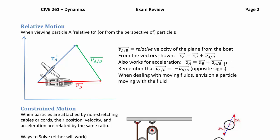The exact same equation form applies for acceleration — no extra terms needed. However, keep in mind that if either of the particles is moving in a curved path, it can have both tangential and normal acceleration, and those components would show up in any of the terms — the absolute term for A, the absolute term for B, or the relative acceleration term. When dealing with multiple particles in relative motion, always push everything back to a Cartesian xy coordinate system.